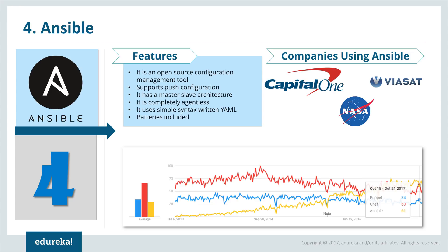Ansible is a configuration management tool that is relatively new. It supports push configuration, meaning the server pushes the configuration onto the nodes rather than the nodes pulling from the server. It has a master-slave architecture and is completely agentless, so you don't need to install anything on the agent nodes. It uses simple YAML syntax and is very easy to set up and use. That is why it is the most trending configuration management tool right now, competing with Puppet and Chef. Giants like NASA have adopted Ansible.